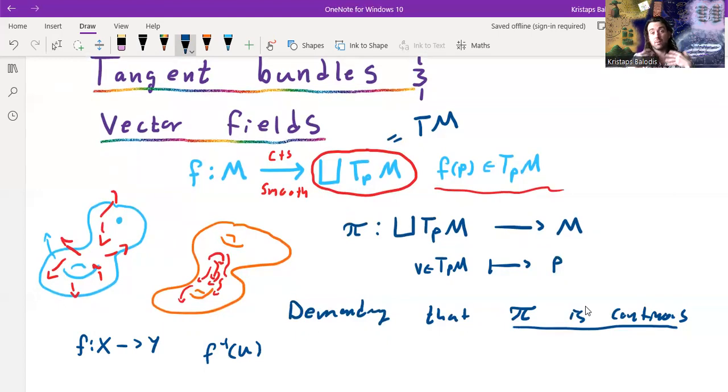So we're going to demand that π is a continuous map. And this gives a topology on TPM. And in fact, we can obtain naturally from this, from M, a manifold structure on TPM as well. Great. So we can talk about continuity, we can talk about smoothness.